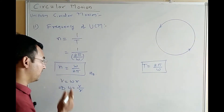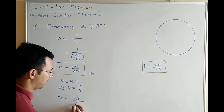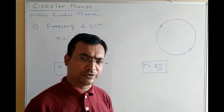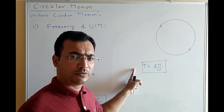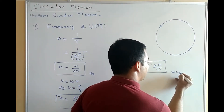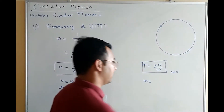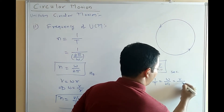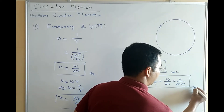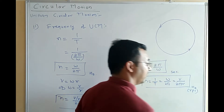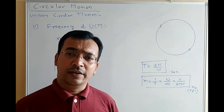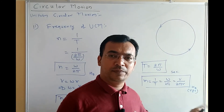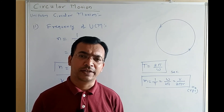So we have two derivations. The time period of uniform circular motion T = 2π/ω, and frequency n = v divided by 2πr, with unit hertz. We say revolutions per second (rps) because frequency is defined as the number of revolutions completed by a particle performing uniform circular motion in one second. So the two parameters of UCM are time period and frequency.